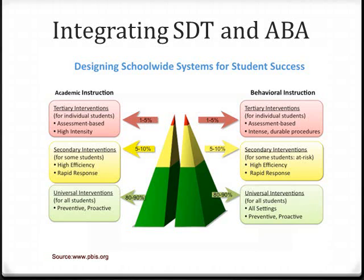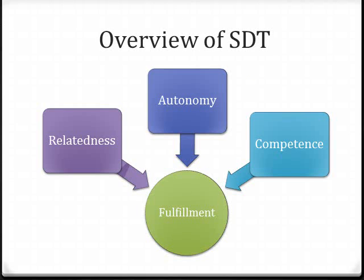In today's inclusion environment, however, content area teachers will have students from all three behavior tiers in their classrooms. One of the main tenets of SDT is that your classroom management style needs to fulfill your students' basic psychological needs of relatedness, autonomy, and competence. If any of these needs are not filled, you're asking for problem behaviors in your classroom. This is relevant to how you relate to your students and what rules you choose to enforce.